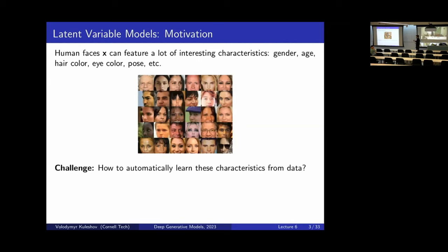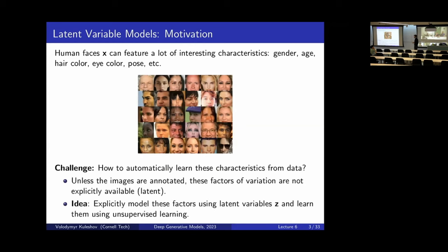For example, there's a lot of interesting structure in this data. We have individuals that have different gender, different skin color, different hair color, eye color. It would be useful, both from a scientific perspective and from a practical perspective, for the model to automatically discover this structure for us. But it's also challenging because these factors of variation are not labeled in the data, which is why we have to use latent variable models for discovering them in an unsupervised way.